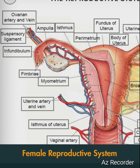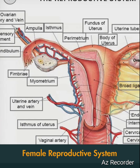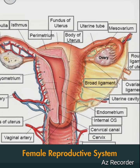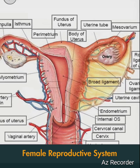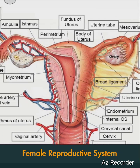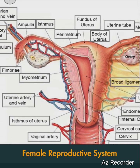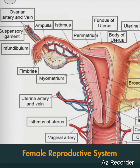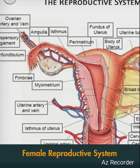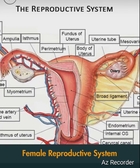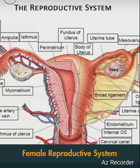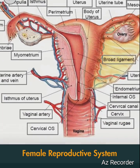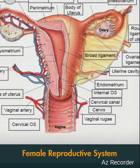The female reproductive system is made up of the internal and external sex organs that function in the reproduction of new offspring. In humans, the female reproductive system is present at birth and develops to maturity, with the ability to produce gametes and carry a fetus to full term.